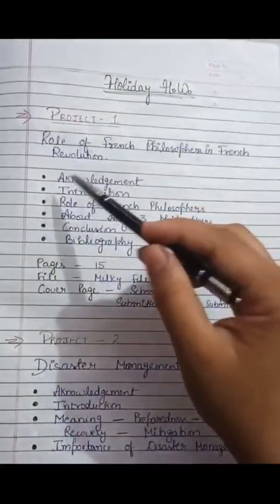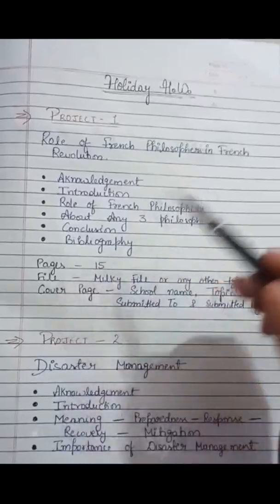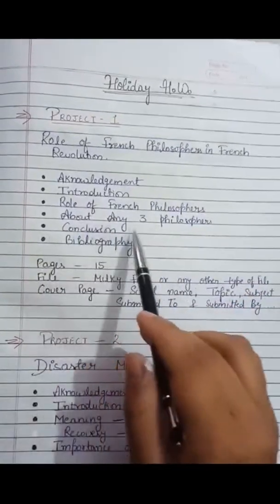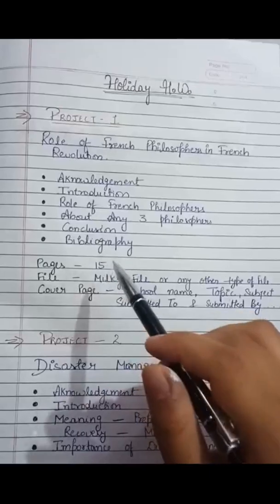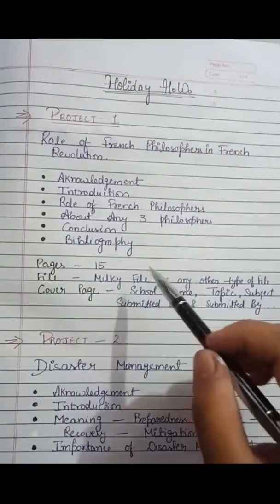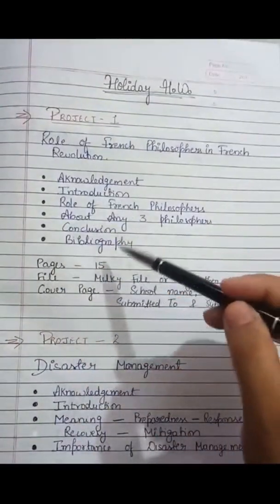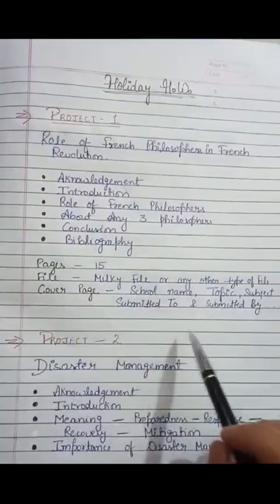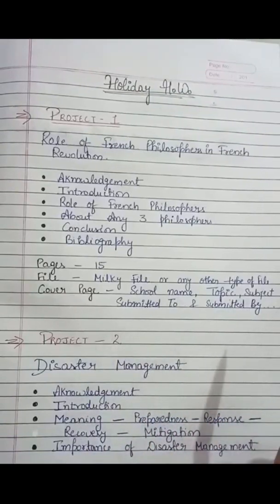Project one topic is the role of French philosophers in the French Revolution. In this project, you have to start with the acknowledgement — means with whose help you have prepared your project. Then you can write about the introduction and role of French philosophers. You can write about any three philosophers in detail. Then at last, you can give the conclusion and write the bibliography — that is the list of books used. This project should be at least 15 pages, put in a milky file or any other available file, with a cover page mentioning school name, topic, subject, and the name of the submitter.